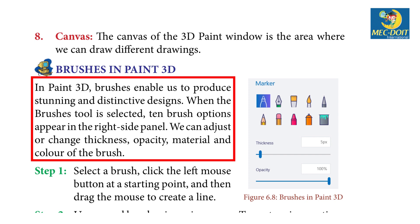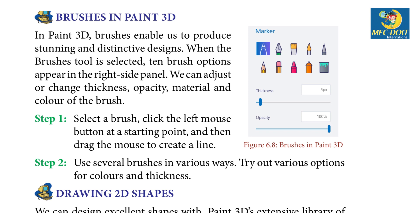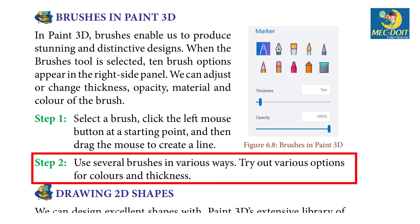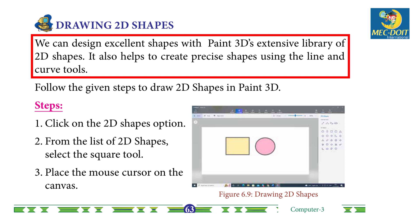Step 1 — Select a brush, click the left mouse button at the starting point, and then drag the mouse to create a line. Step 2 — Use several brushes in various ways; try out various options for colors and thickness. Drawing 2D Shapes: We can design excellent shapes with Paint 3D.